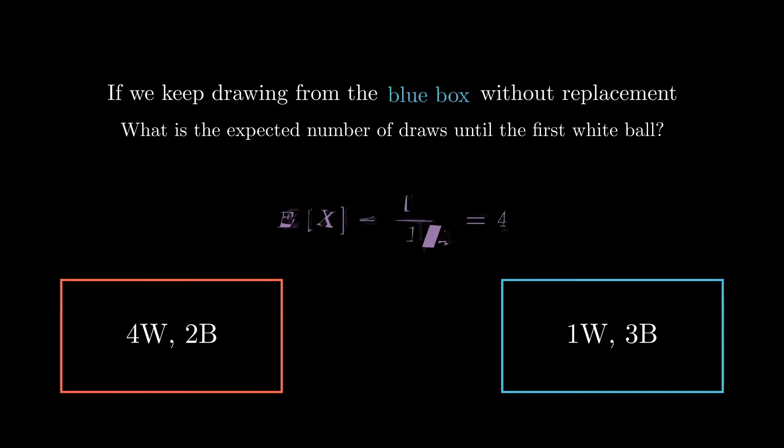Most of you can probably recognize that this is just a geometric distribution, so we just divide one by the probability of getting a white ball. Again, we add the condition that we're drawing from the blue box, so if we change the problem to drawing from the red box, we just need to change the condition again.